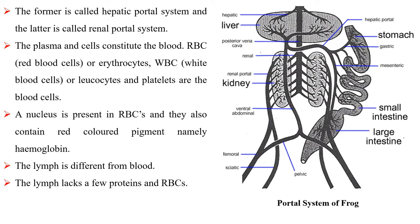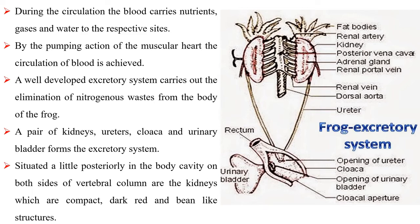The plasma and cells constitute the blood. RBCs or erythrocytes, leukocytes and platelets are the blood cells. A nucleus is present in RBCs and they also contain red colored pigment, namely hemoglobin. The lymph is different from blood; the lymph lacks a few proteins and RBCs. During circulation, the blood carries nutrients, gases and water to the respective sites. By the pumping action of the muscular heart, the circulation of blood is achieved.